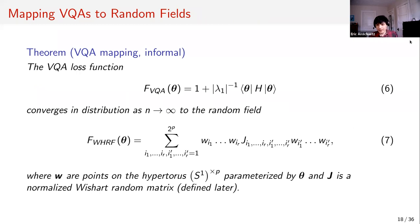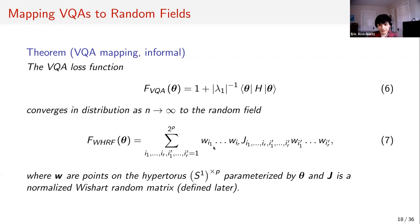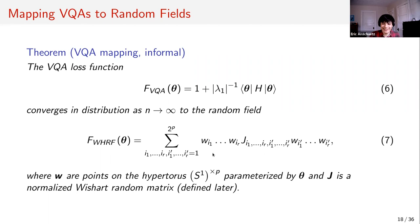We show that this VQA loss function in the limit of many qubits looks like a specific random field, similar to the Gaussian one for neural networks but with two key differences: the parameters live on the torus rather than a sphere, and the random matrix J is now a Wishart matrix rather than a Gaussian matrix. We're essentially writing the VQA loss function in a less physics-heavy, more mathematical form.